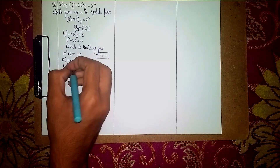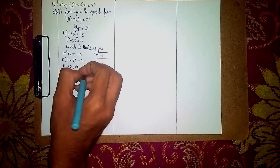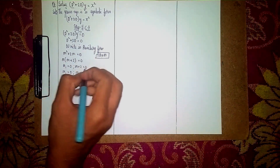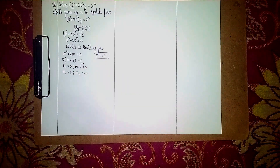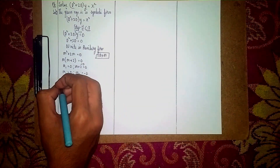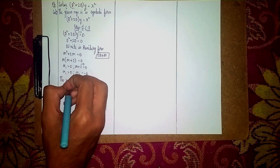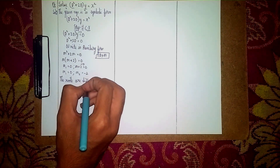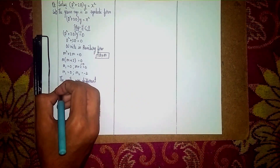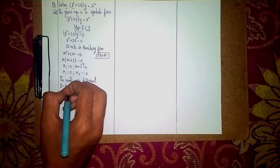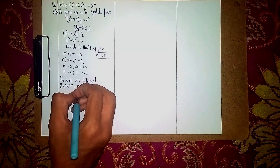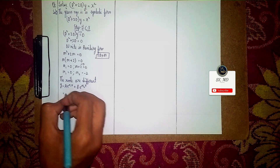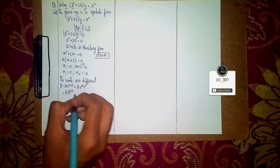So our first root is m₁ = 0, and from m + 2 = 0, we get m₂ = −2. The roots are different. When roots are different, our equation is y = A·e^(m₁x) + B·e^(m₂x).